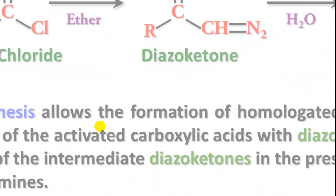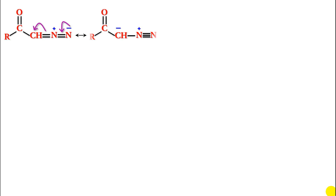This diazo ketone is now going to undergo the Wolff rearrangement. The diazo ketone has a resonating structure where the carbon is negatively charged — a carbanion. Whenever a group leaves with this pair of electrons — nitrogen gas leaves — we get a carbene.